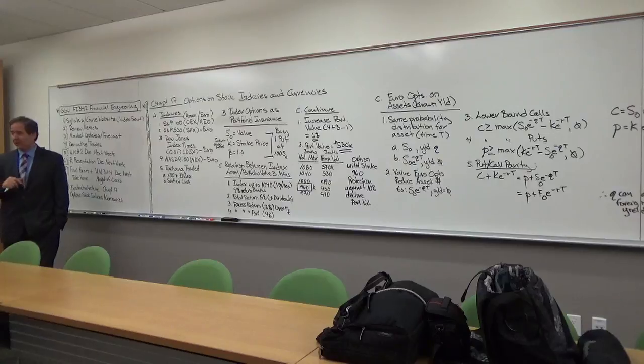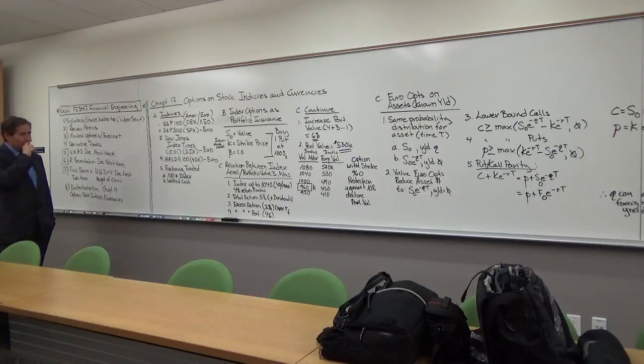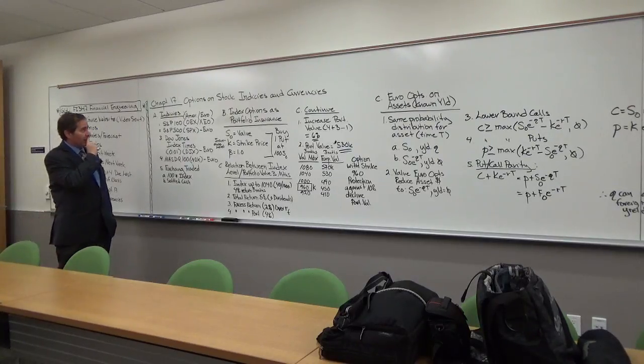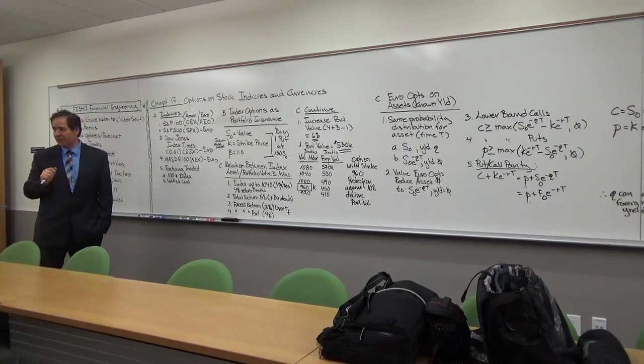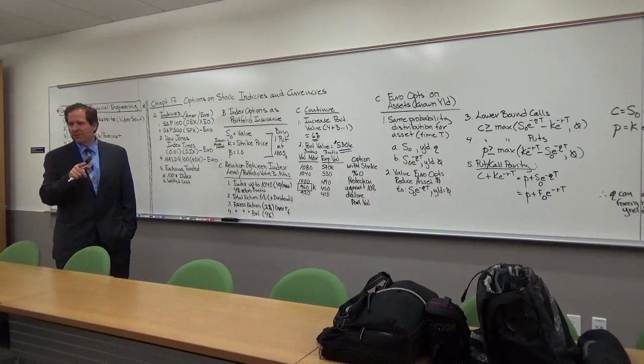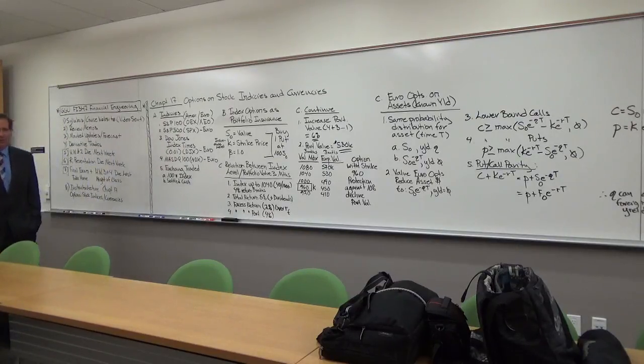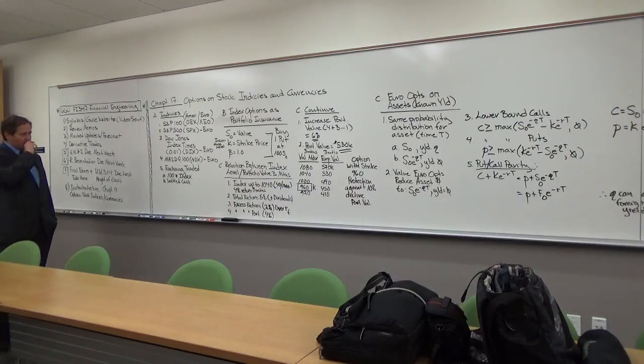So Chapter 17 is on options on stock indices and currencies, and it basically uses the Black-Scholes model to do the valuations, which is pretty straightforward, which I'll go over in a minute. But let me just walk you through the mathematics, you know, on the indices.